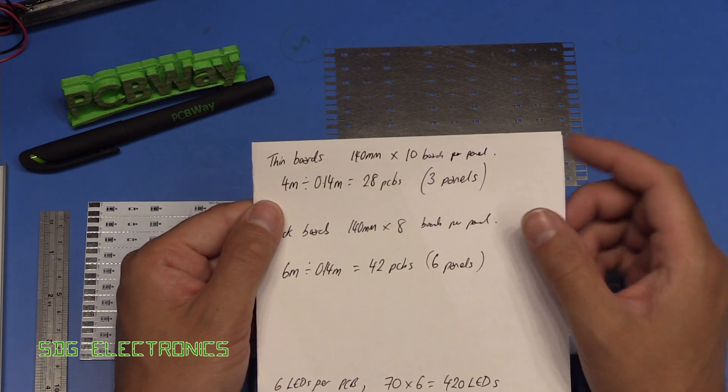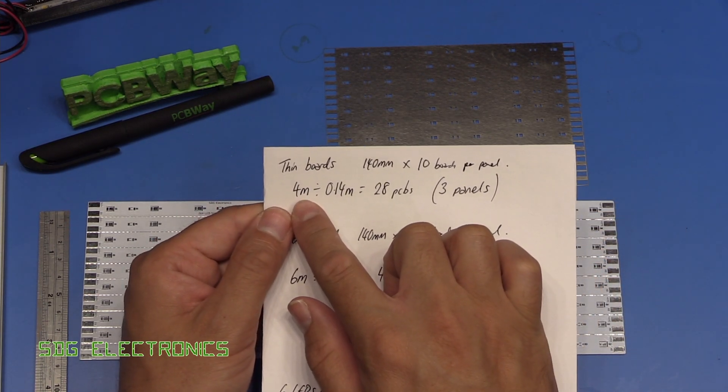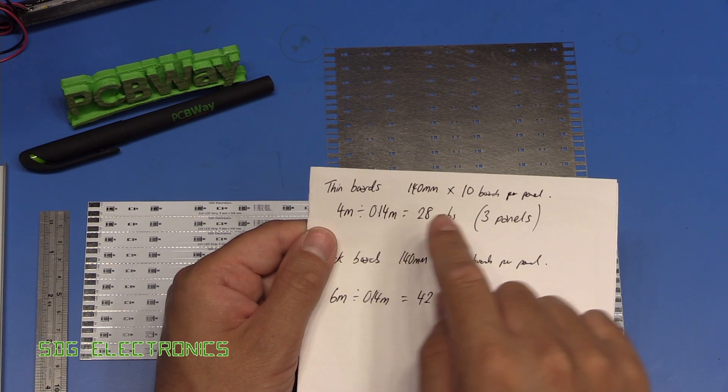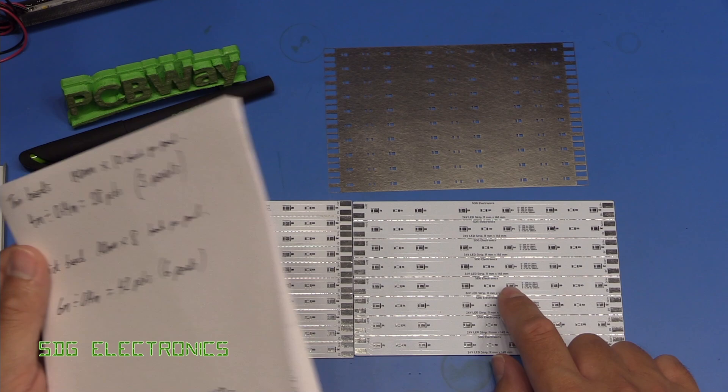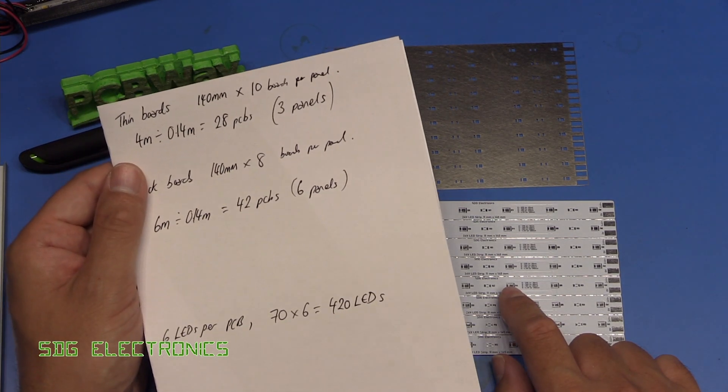If you're interested, we've got to make four meters of the thin PCBs which is the equivalent of three panels and we've got to make about six panels of the thicker PCB, so that's what we're going to be assembling today.